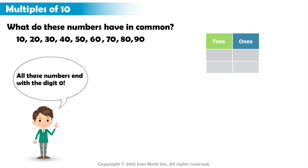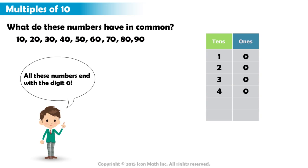In a place value chart, the digit in the ones place in all these numbers is 0.